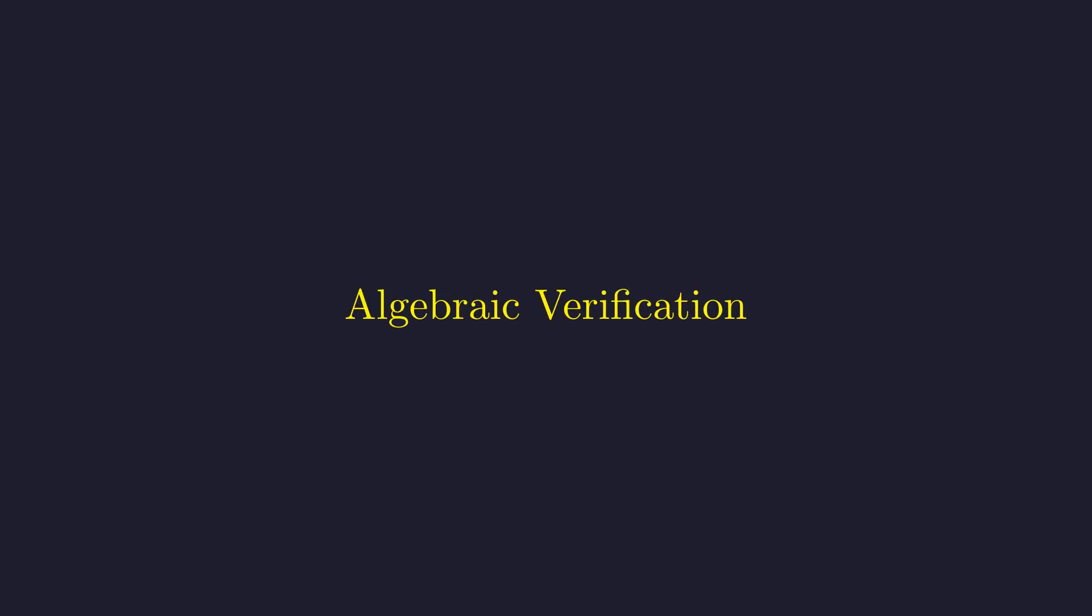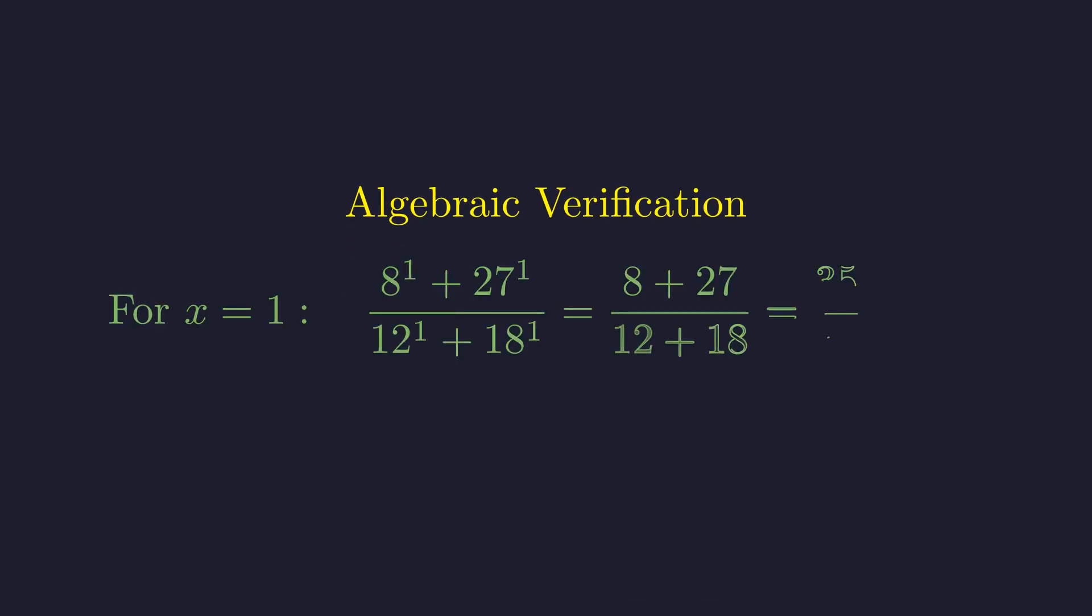Before we celebrate, let's double check these solutions by plugging them back into our original equation. For x = 1, we get 8 + 27 in the numerator, 12 + 18 in the denominator. That's 35/30, which simplifies to 7/6. Perfect.